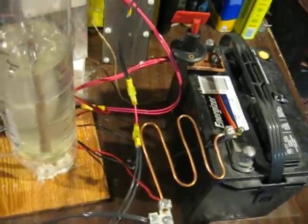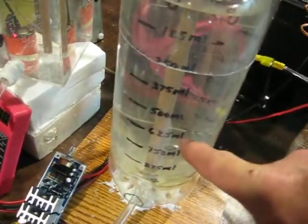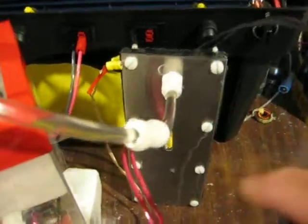I have a 12-volt battery here. This is my current shunt. This is my measuring device. This is my PWM module. Here's my voltage and current meter. This is my bubbler. And this is my new closed cell.